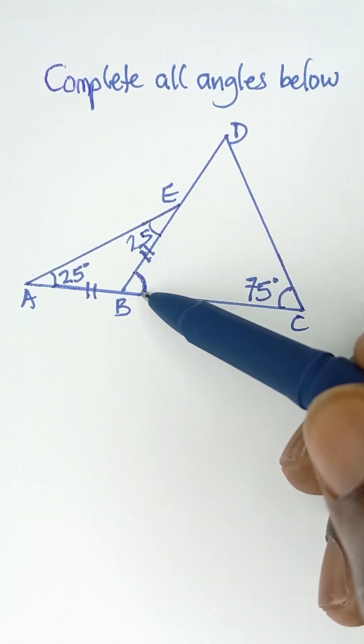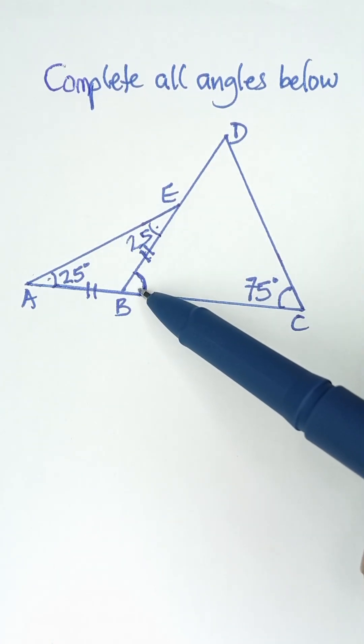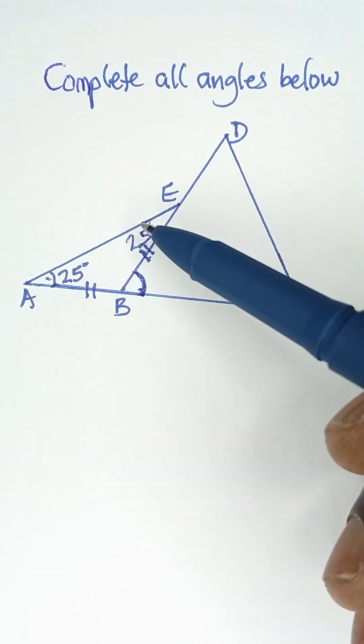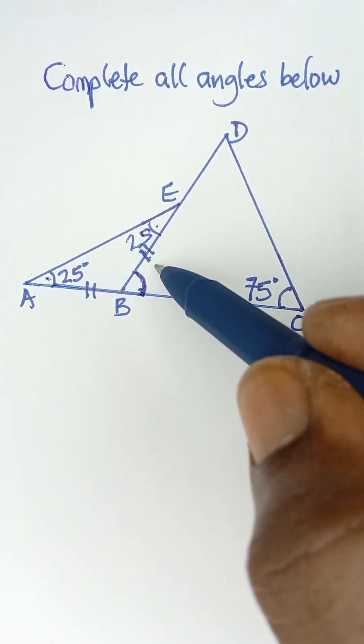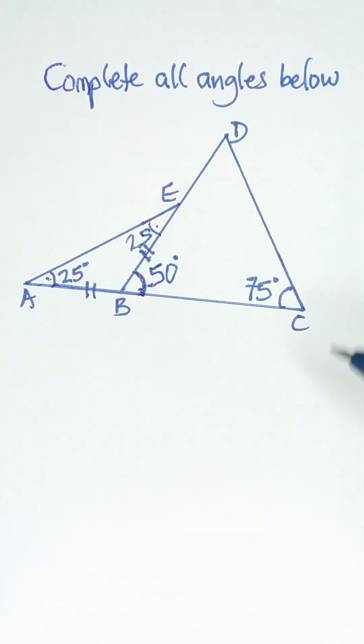An exterior angle of a triangle is equal to the sum of the two opposite interior angles. So this exterior angle will be the sum of 25 plus 25, the two opposite interior angles. That means 25 plus 25 is 50, so this angle is 50 degrees.